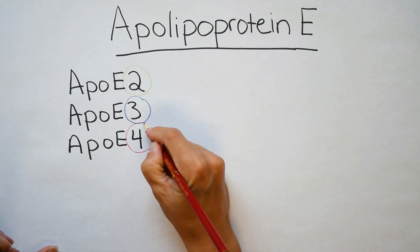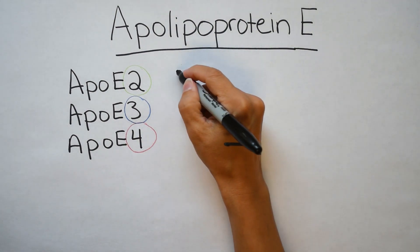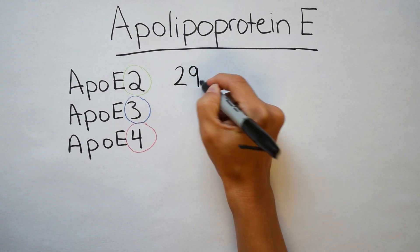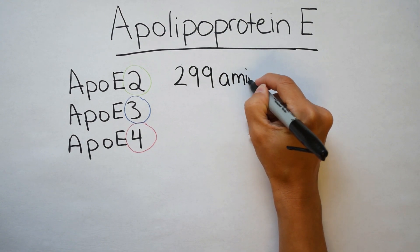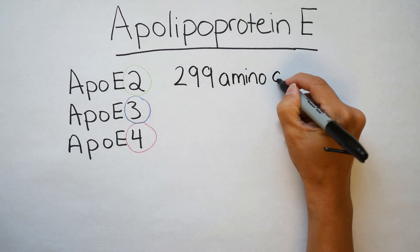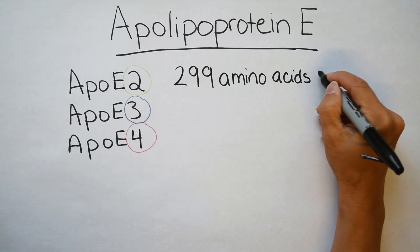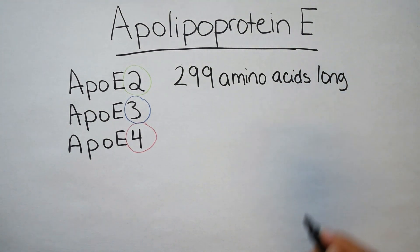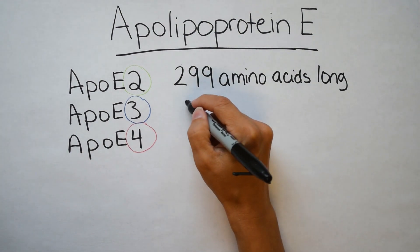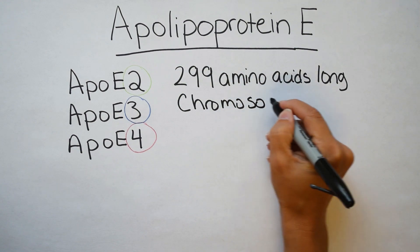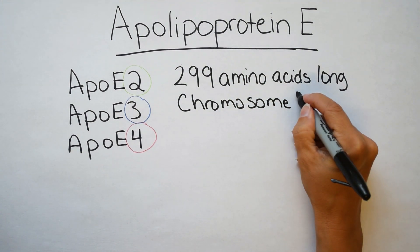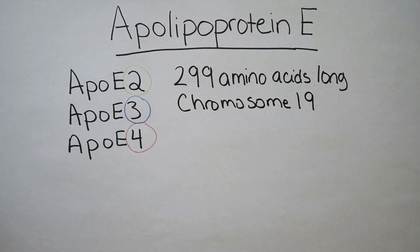If you were a researcher looking for apolipoprotein, you would find it on chromosome 19. It is a glycoprotein — a protein with a sugar attached — about 299 amino acids long. The key point is that the three variants differ in only one to two of those 299 amino acids, which is kind of amazing. And even though there are only one to two changes, there are large effects that can be seen.